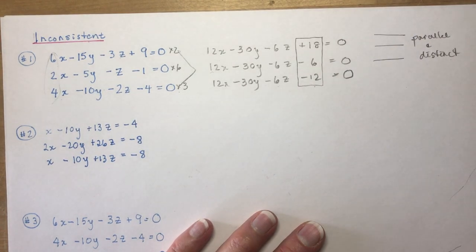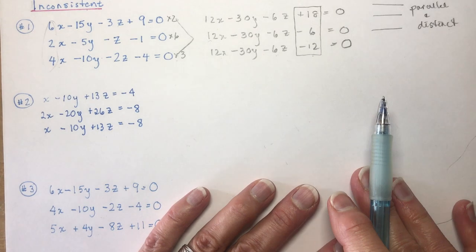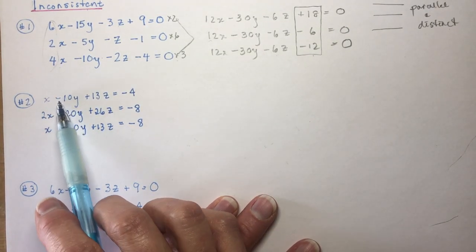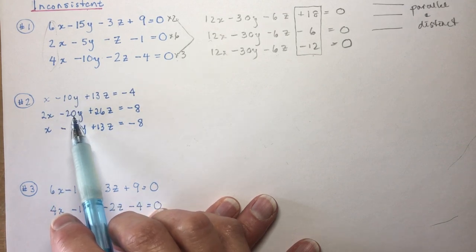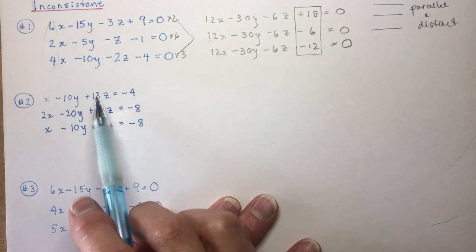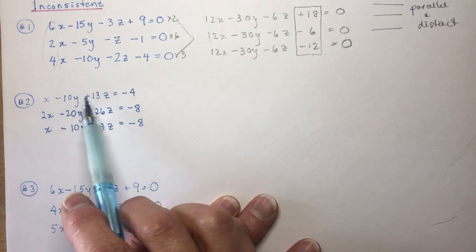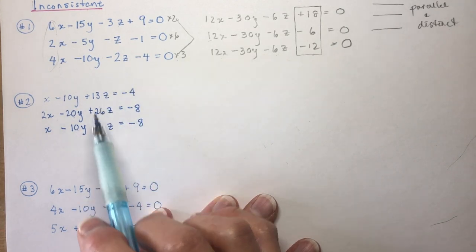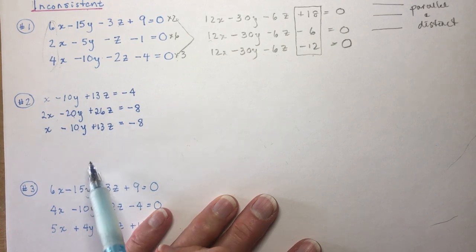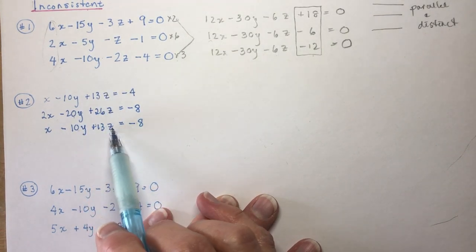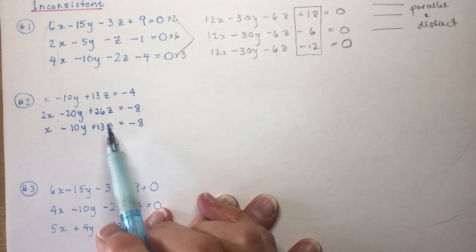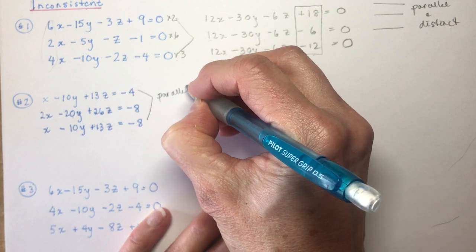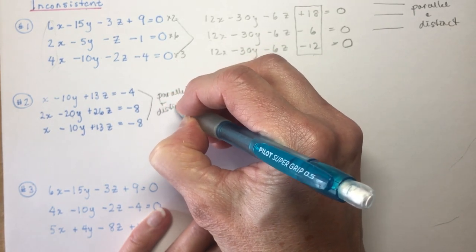So the second one, again, what we want to do is check the normals. So, if I look here, I have 1 minus 10. This is 2 minus 20. Oh, so this one looks like it's doubled that one. This one has exactly the same normal as this one, but they have different d values. If I brought it to the other side, that would be d is 4, d is 8. So, I know these two are parallel. They're parallel and distinct. These two, parallel and distinct.